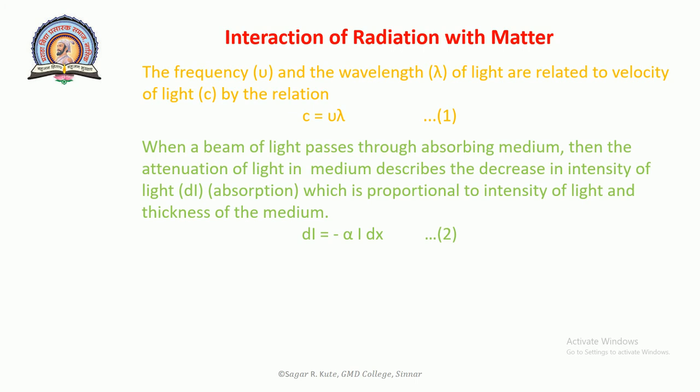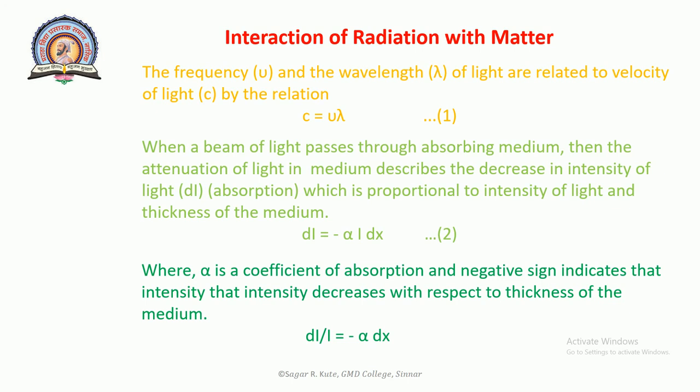When a beam of light passes through an absorbing medium, the attenuation of light in medium describes the decrease in intensity of light dI. The absorption is proportional to intensity of light and thickness of the medium: dI equals minus alpha I dx, where alpha is coefficient of absorption and negative sign indicates that the intensity decreases with respect to thickness of the medium.